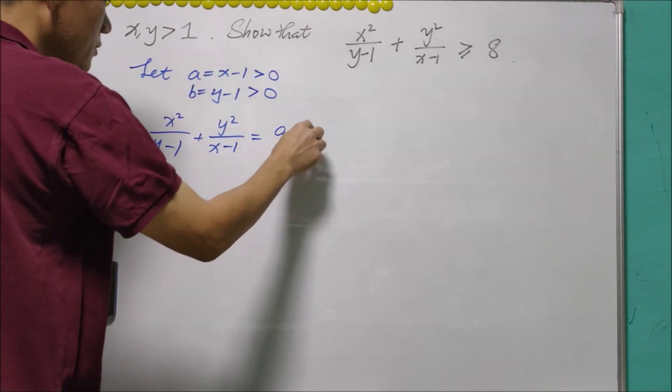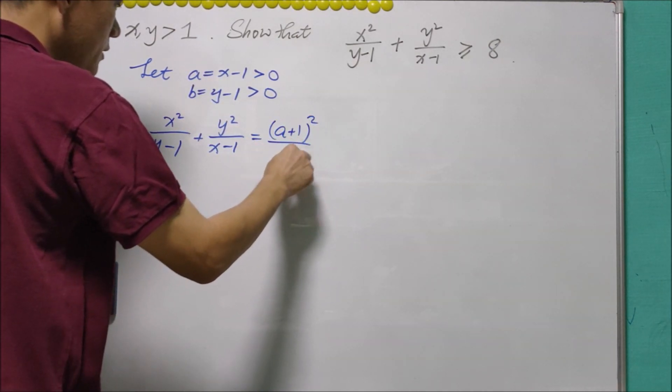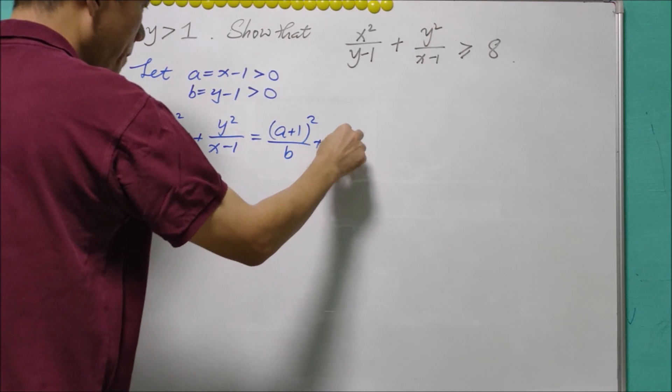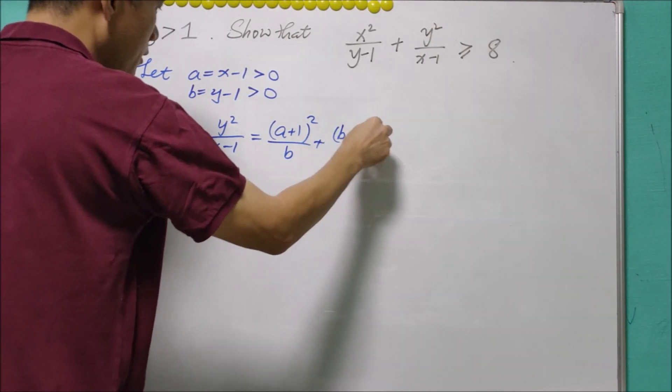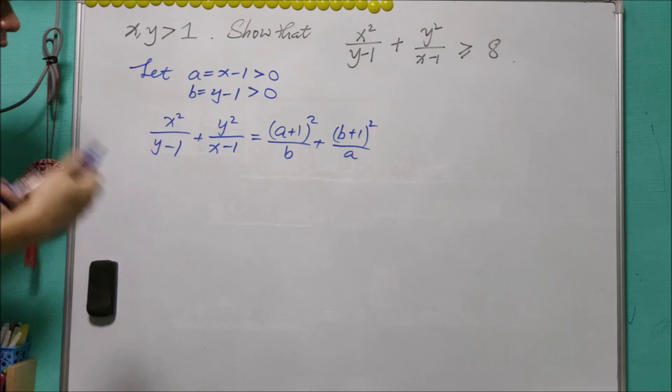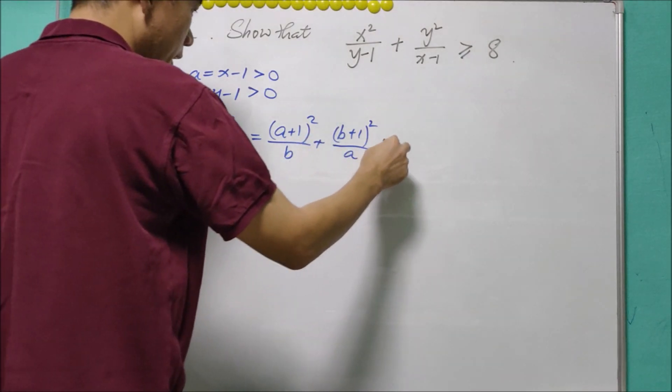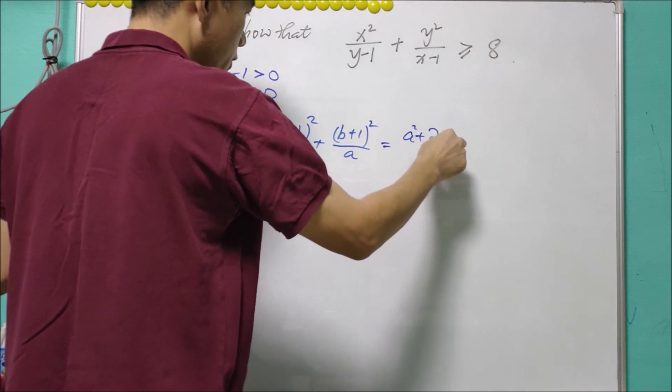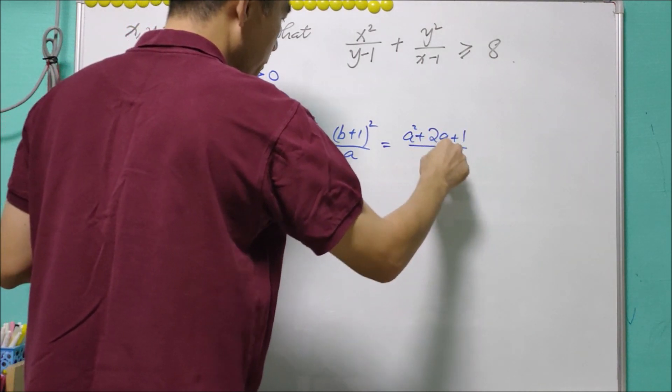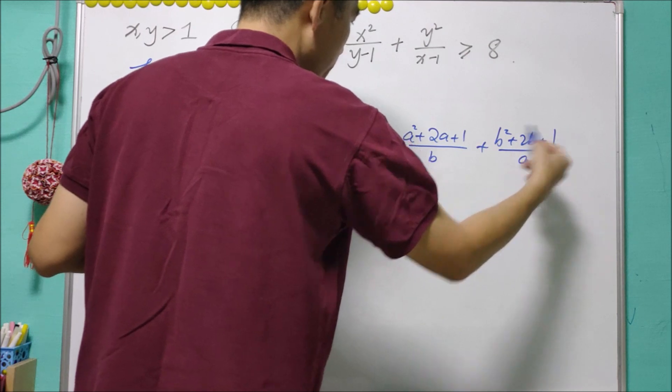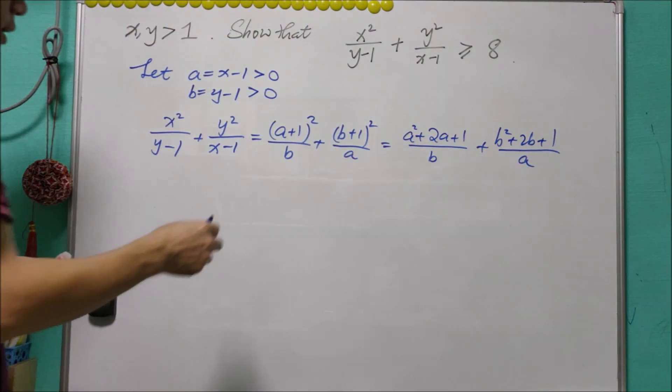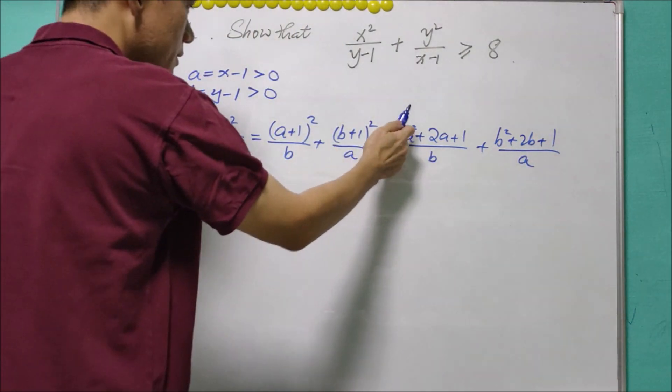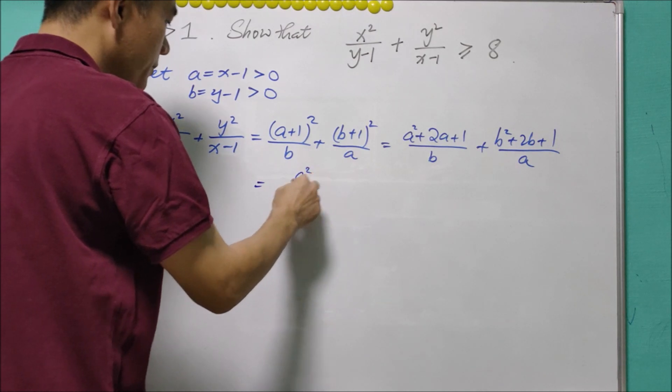The expression on the left-hand side will be equal to (a+1)²/b + (b+1)²/a. We expand it and we'll get a² + 2a + 1 over b, plus b² + 2b + 1 over a. And this can be written as a²/b...